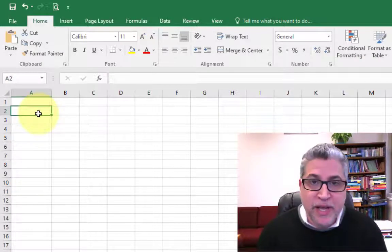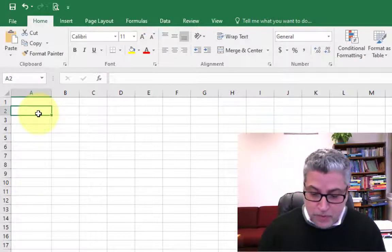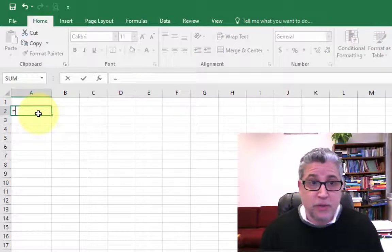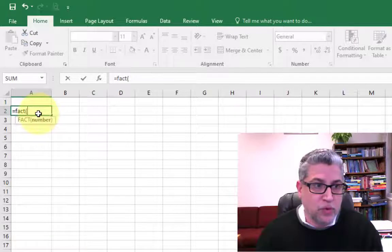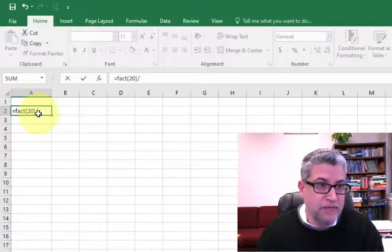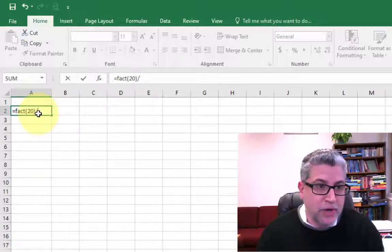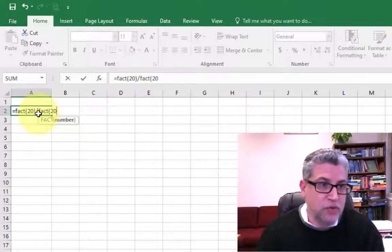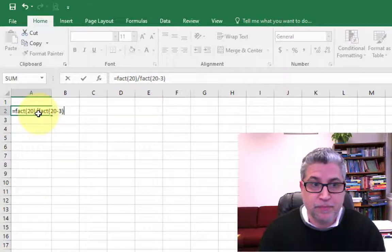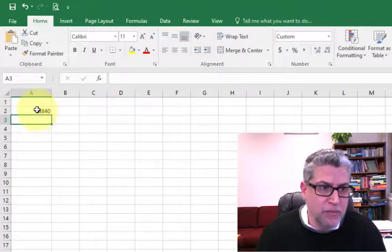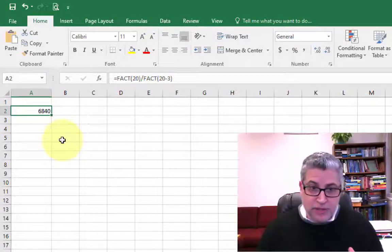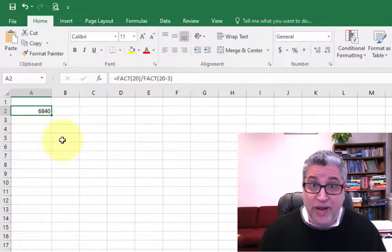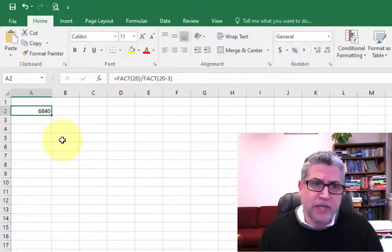Okay. So we're going to answer our question with Excel. Start off always with an equal sign. And if we're going to use the factorial formula, we need factorial of 20 divided by, and then we're going to have factorial of 20 minus 3. So we get a whole bunch of different possible orderings that we could have, top three out of 20.